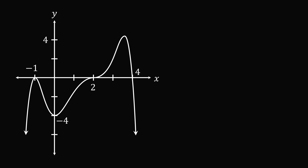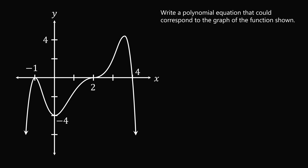Now for Question 4: write a polynomial equation that could correspond to the graph shown. At x equals 4, we have a factor x minus 4. At x equals 2, the graph looks like a cubic inflection — not a bounce — so we assign a triple root: (x minus 2) cubed. At x equals negative 1, the graph bounces off, indicating a double root: (x plus 1) squared.